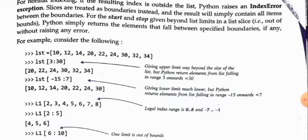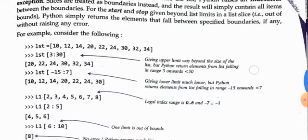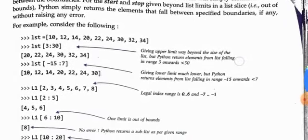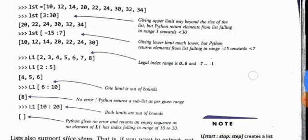Similarly, if we write list[-15:7], in negative indexing you cannot go to -15 because the minimum is -9 for this list. So it starts from the beginning of the list and goes up to index 6 — one step before 7. Index 6 corresponds to 30. So the list will be printed from the start up to that index.